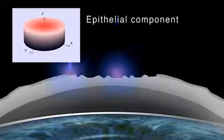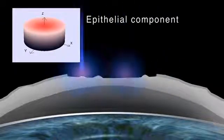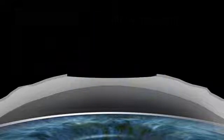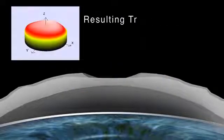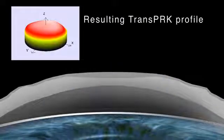TransPRK is a versatile approach. It's useful in all cases where a difficult epithelial flap is expected, or when the epithelium covers corneal irregularities of the stromal tissue.